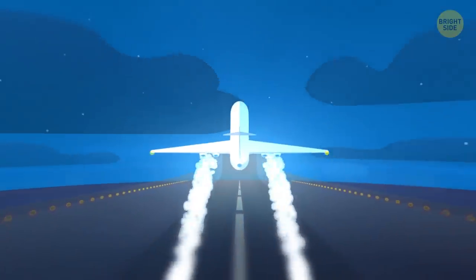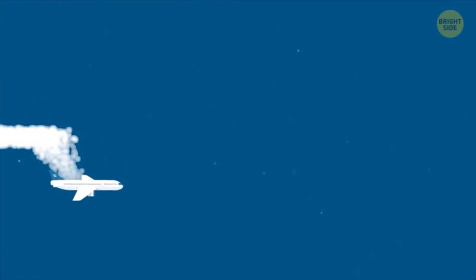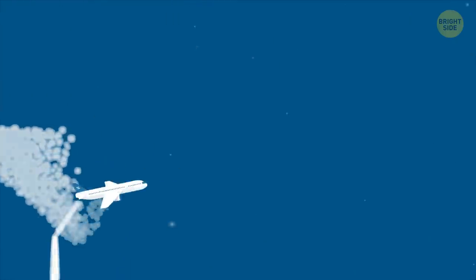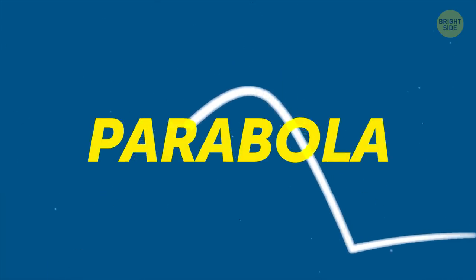Another way is to take a flight on a small jet which can do aerial stunts. When it flies in a pattern called a parabola, you'll also be in a zero-gravity state for some time. Not the most pleasant feeling, right?